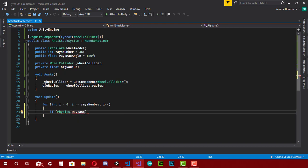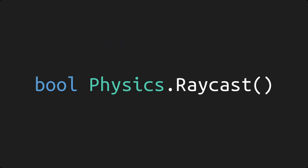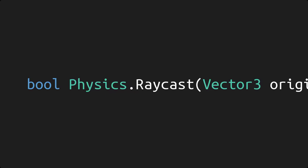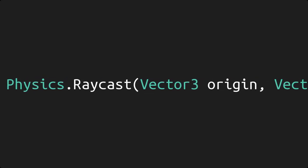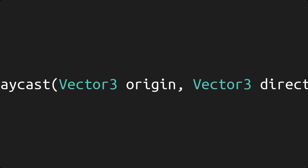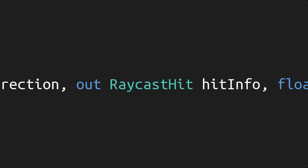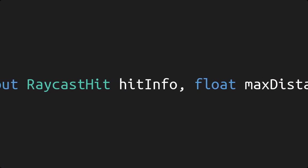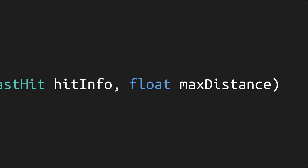Let me explain how this method works. Raycast is a boolean function that creates an axis in world space, and if any object intersects with the axis its value becomes true. This function takes four parameters: the first is a Vector3 indicating the axis start point; the second is a Vector3 indicating the direction of the axis; the third is an out RaycastHit parameter — the variable where we store the data of the detected collider and axis; and the last parameter is a float indicating the length of the axis.